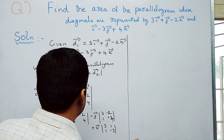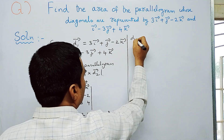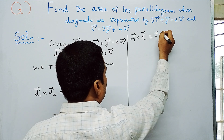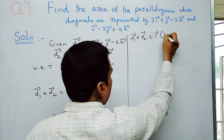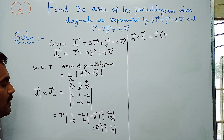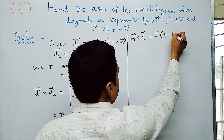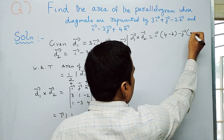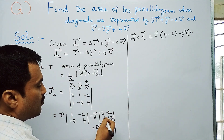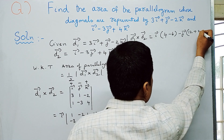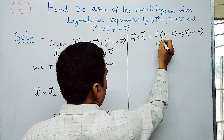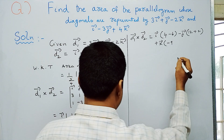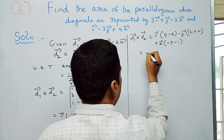Now simplifying: for i̅, cross-multiplying gives (1×4) − (−3×−2) = 4 − 6 = −2. For j̅, we get (3×4) − (1×−2) = 12 + 2 = 14, and since we subtract j̅, it becomes −14. For k̅, we get (3×−3) − (1×1) = −9 − 1 = −10.